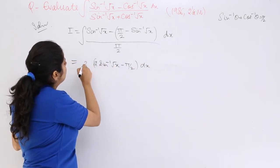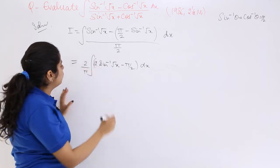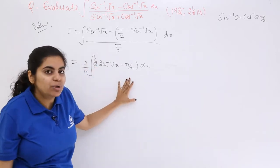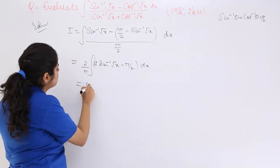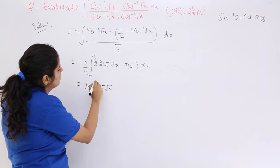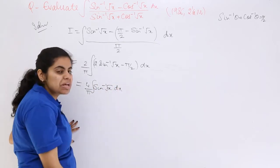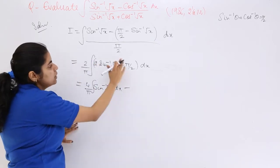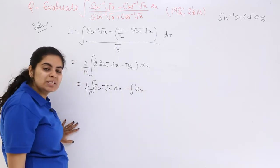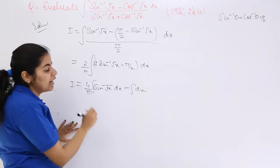In the numerator it becomes 2 over π. Now let's introduce this 2 over π inside. So it becomes 4 over π times sin inverse root x integration with respect to x, minus 2 and 2 cancel, π and π cancel, minus integration of dx. This is your I.